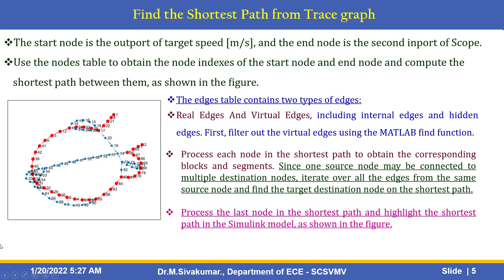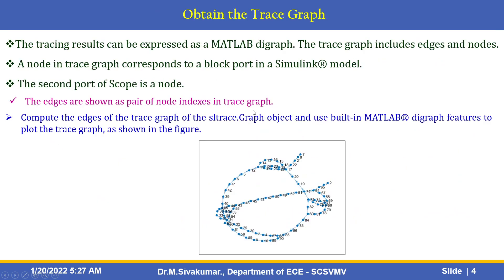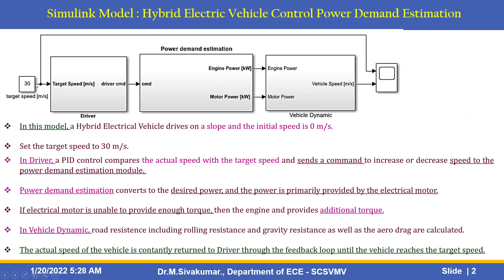To find the shortest path from the trace graph: once the trace graph is developed, we can find the shortest path. There are two types of edges — real edges and virtual edges. The virtual edges and real edges include internal edges and hidden edges. First, filter out the virtual edges using the MATLAB find function. The start node is the output port of the target speed — node 30.